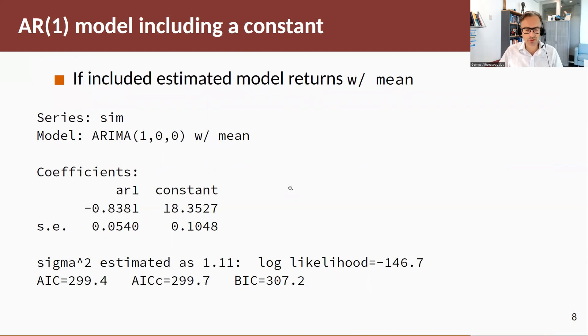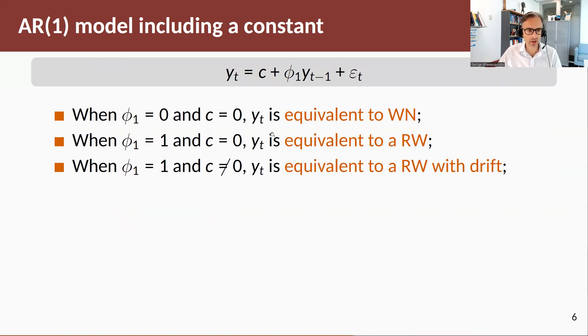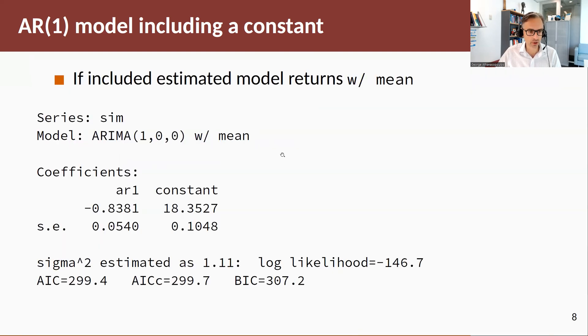Here's a bit of flavor. Here's the output of the simulated process. I estimated an AR1 using the ARIMA function, and I get back the AR1 coefficient and the constant—the constant as I was writing the model. I don't get the mean, I get the constant. If it includes a constant, the output will tell you it is with mean.